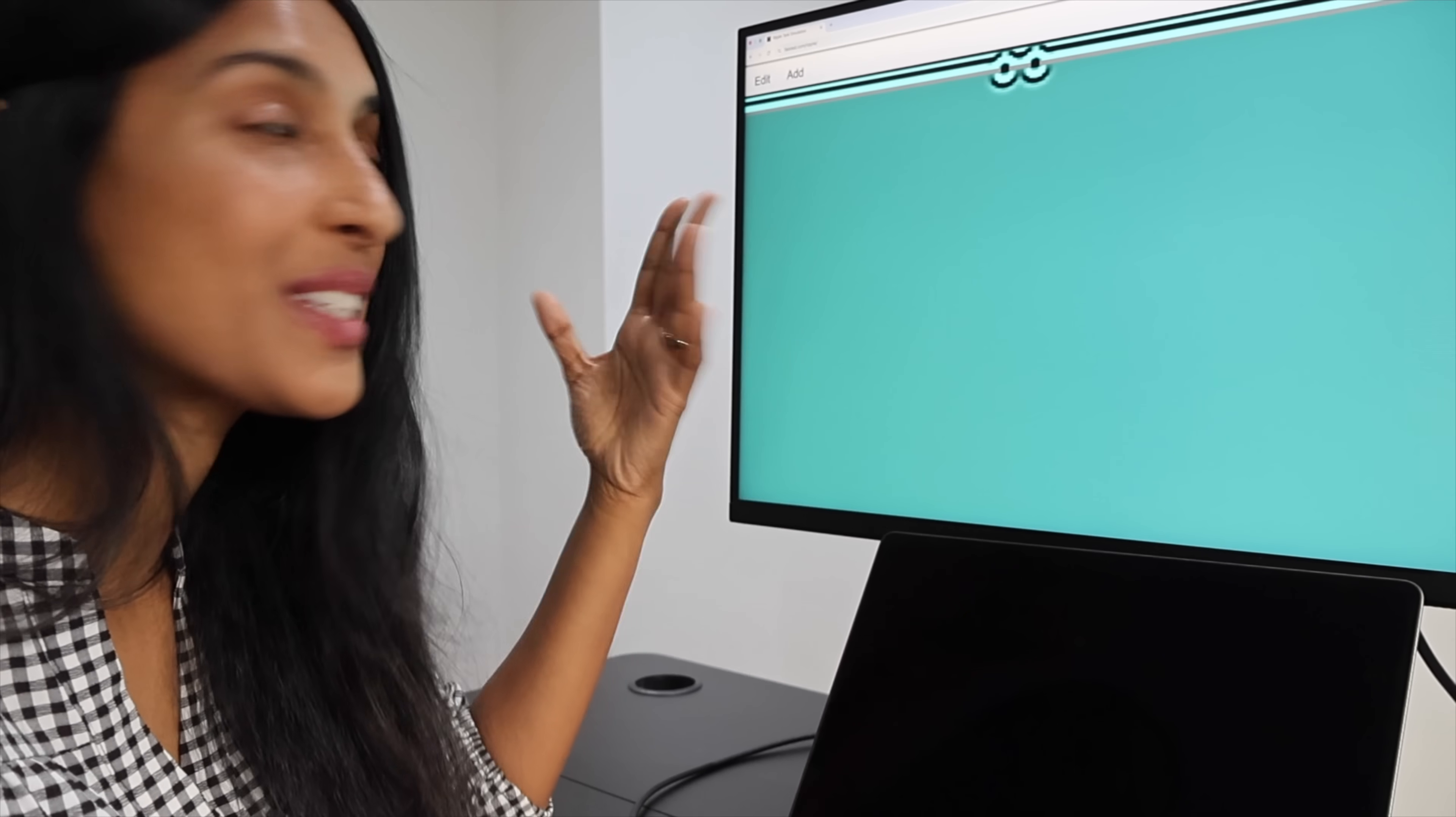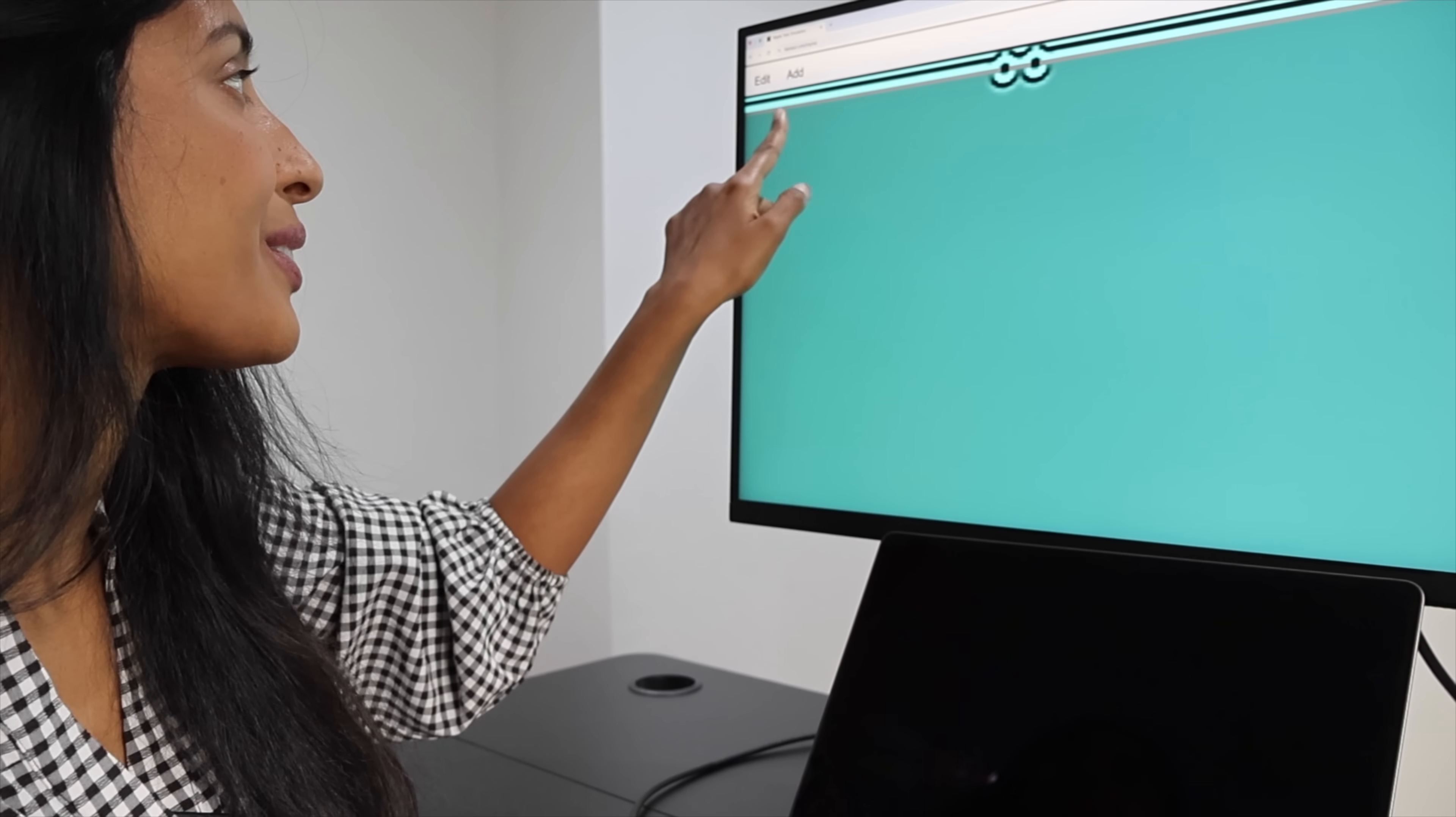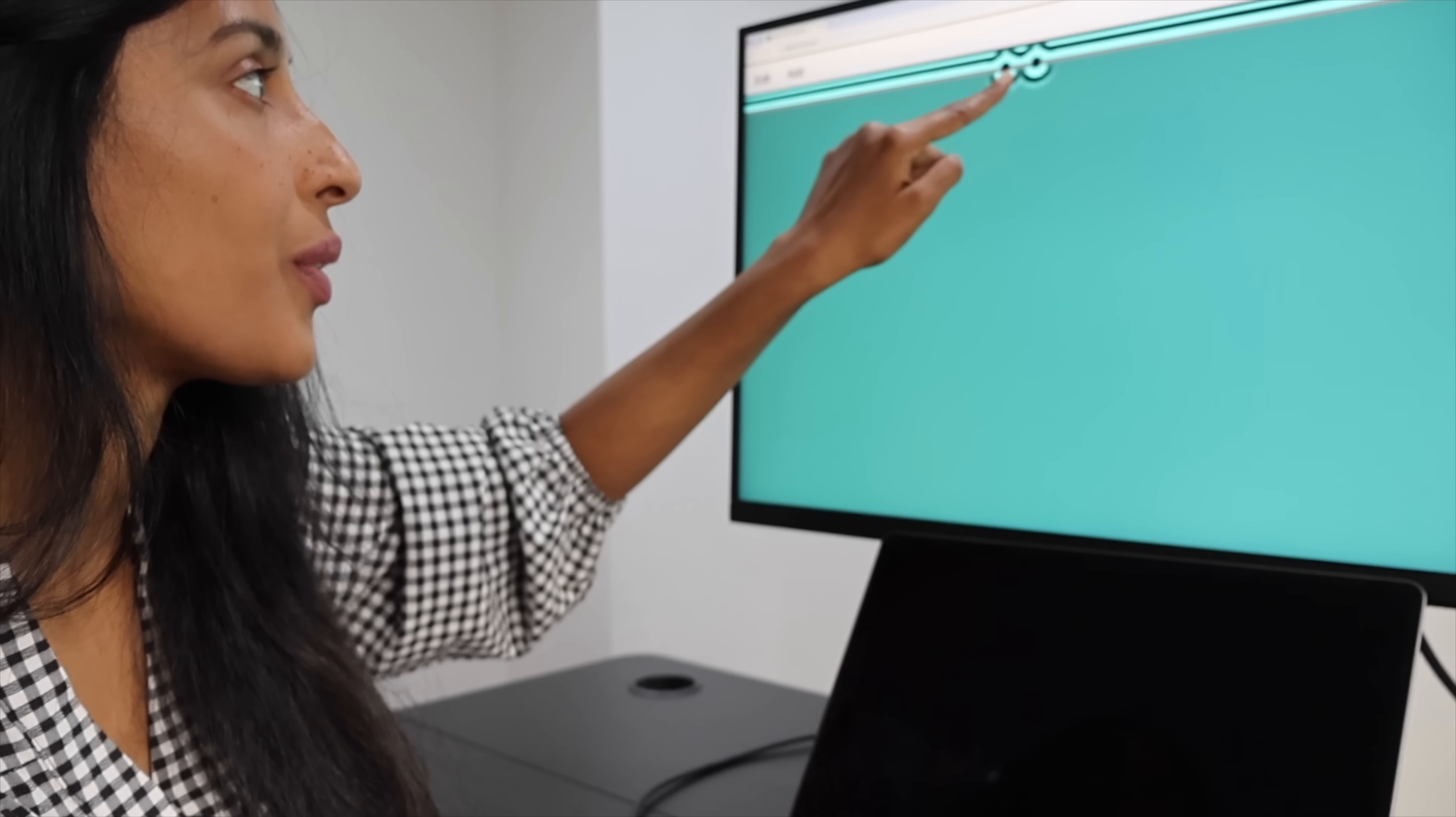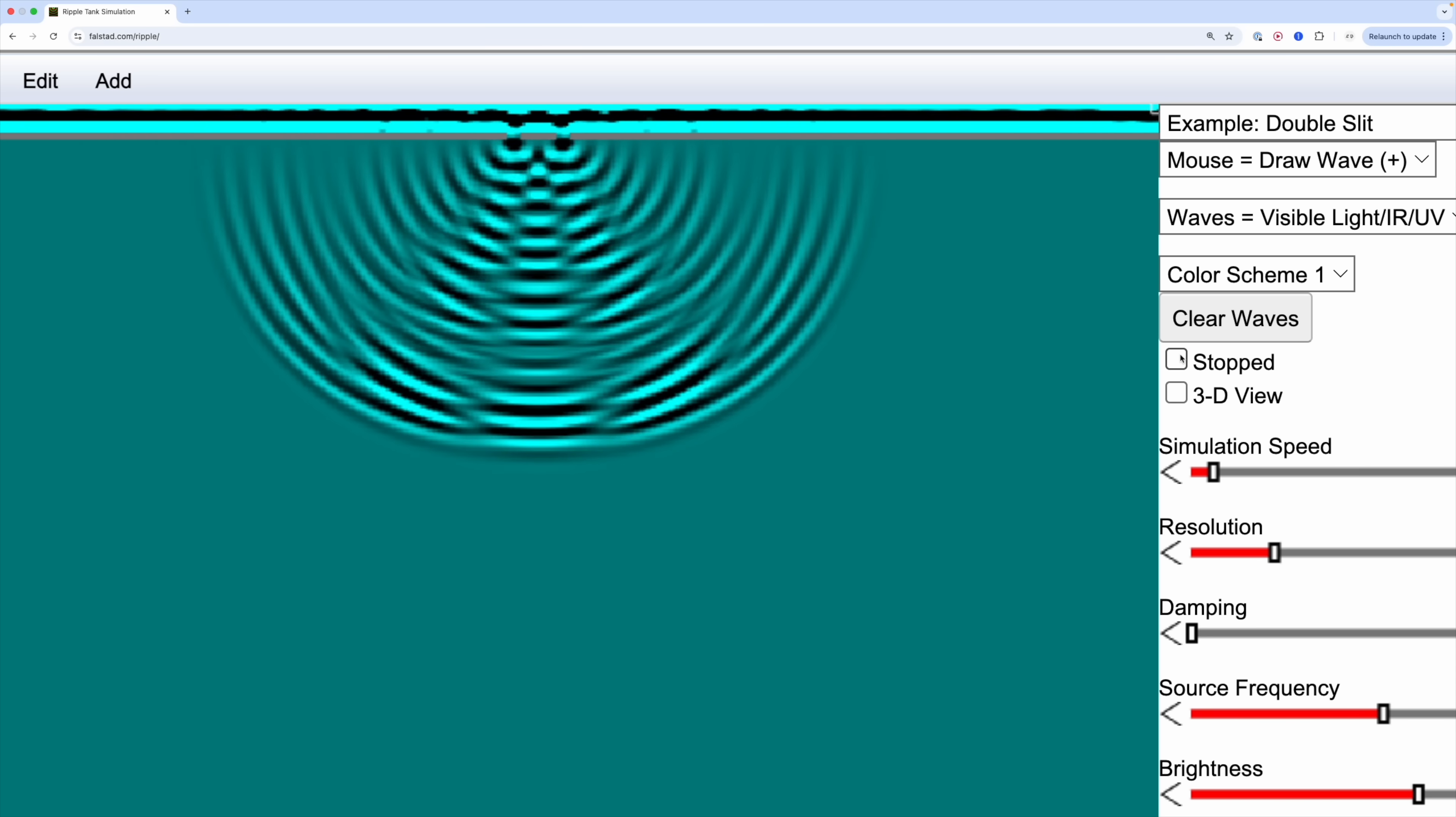I love this website because it's a wave simulator, and I'll link it in the description. But basically what we're doing here is we have this wall with two narrow slits, and we're going to see what happens when these waves go through.